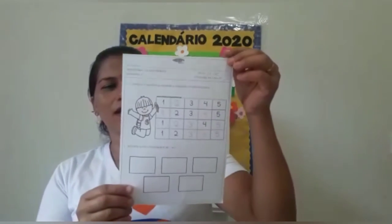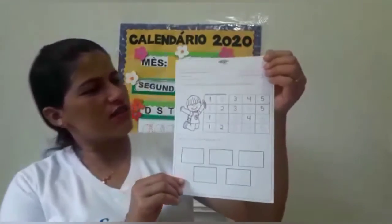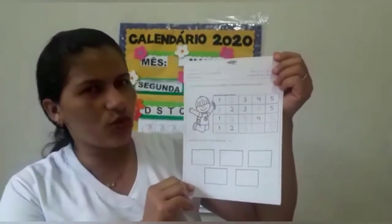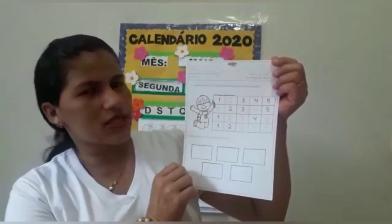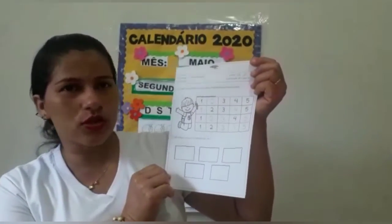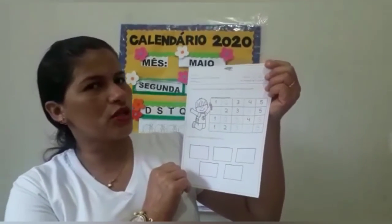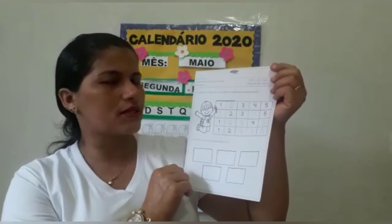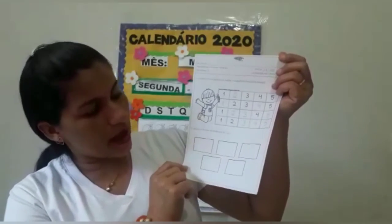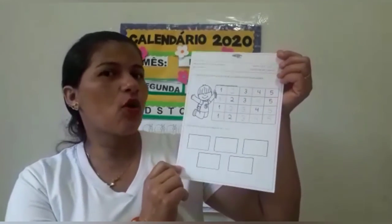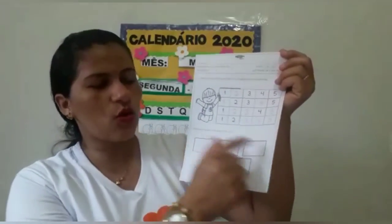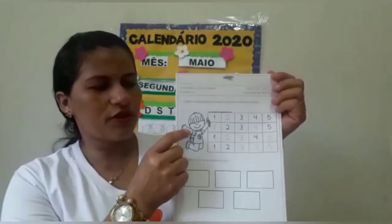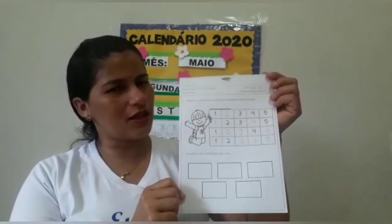A atividade do caderno é esta daqui. Olha que legal! Você vai treinar a escrita, treinar a leitura e vai fazer uma colagem bem legal. Aqui em cima, você tem uma sequência dos numerais do 1 ao 5, e os que estão em pontilhado você vai cobrir com bastante capricho. E na atividade de baixo, número 2, você vai procurar em revistas, jornais ou outros materiais, numerais de 1 ao 5 e colar dentro dos quadradinhos. Pode finalizar colorindo o desenho do menininho.